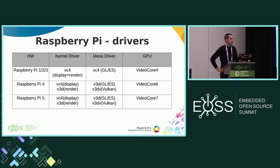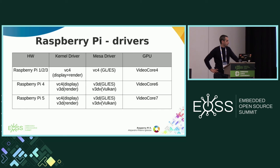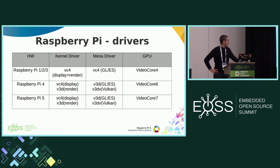In relation to the drivers, we have five devices. For the Raspberry Pi 1, 2, and 3, both the renderer and the display use VC4. In the case of the Raspberry Pi 4, the GPU is different — it's VideoCore 6 — but it still uses VC4 as the display, and has a kernel driver for rendering called V3D. Now in the Raspberry Pi 5, it uses the same layout but the GPU is different.